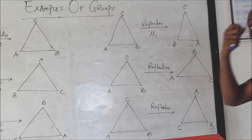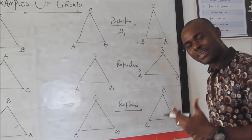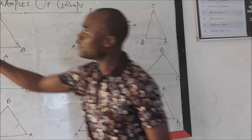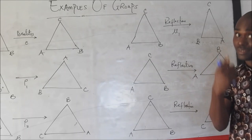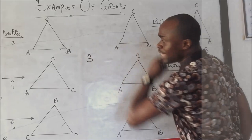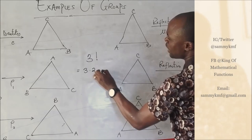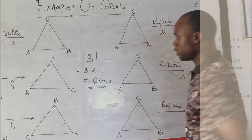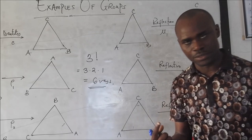We call this the permutation — the arrangement — of an equilateral triangle. In this equilateral triangle, we have three vertices and three sides that we can arrange in six different ways. Remember permutation: three factorial is simply three times two times one, which equals six. So we have six symmetries.